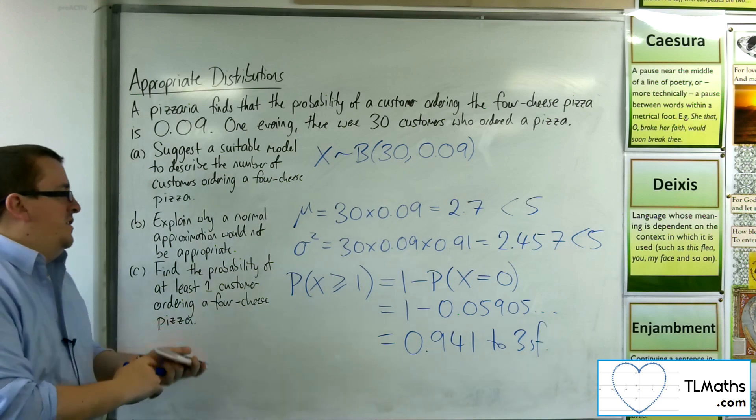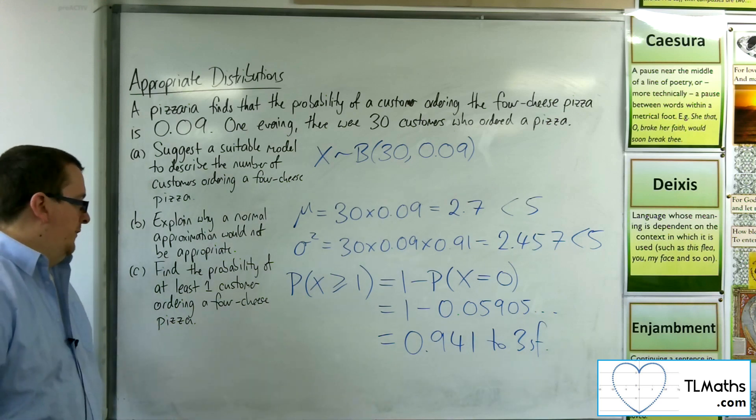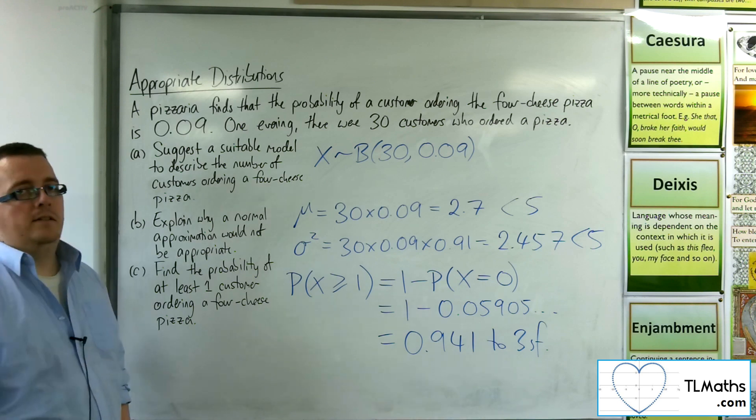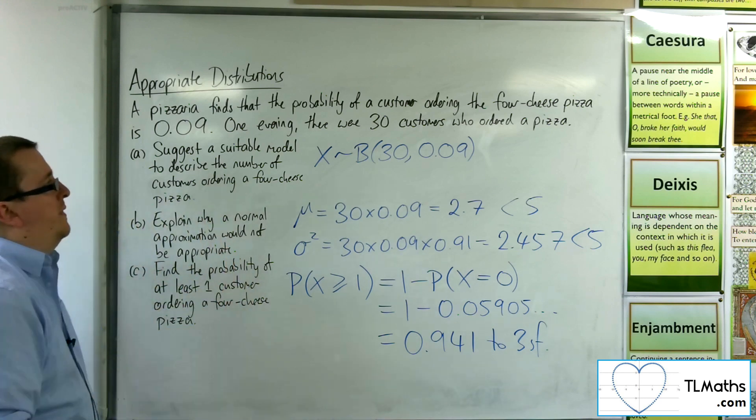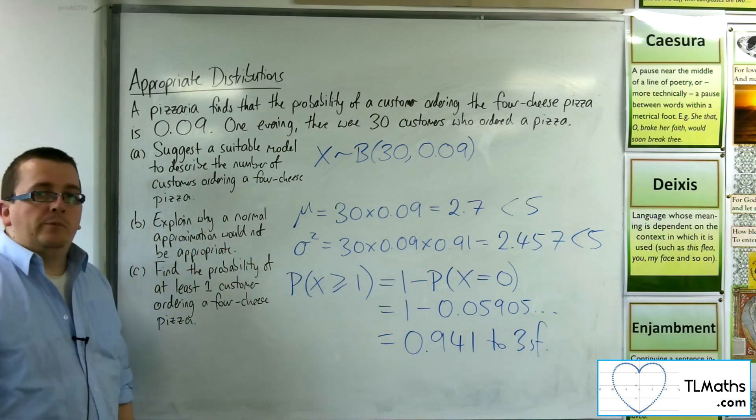So there's a 94.1% chance that at least one customer will order a 4-cheese pizza. So that is how we can work with a problem like this that is asking us questions about the distributions themselves.